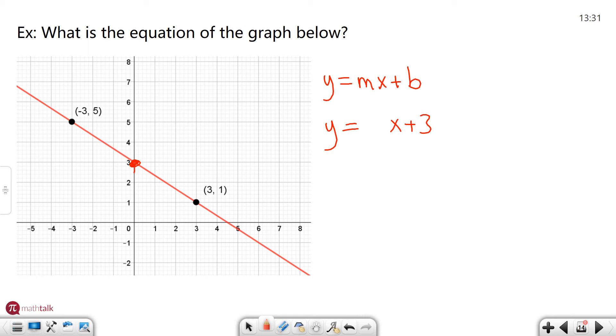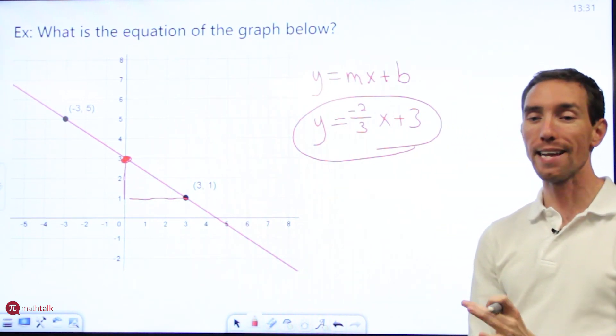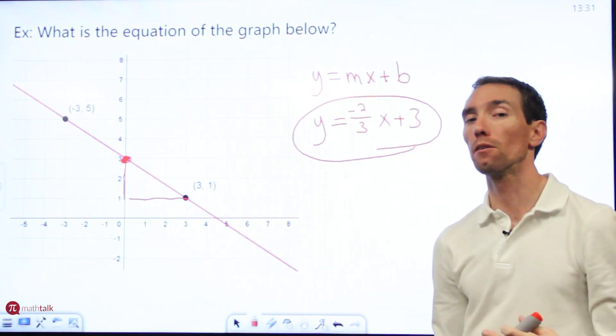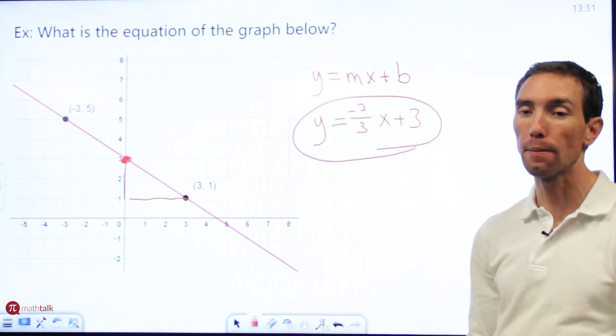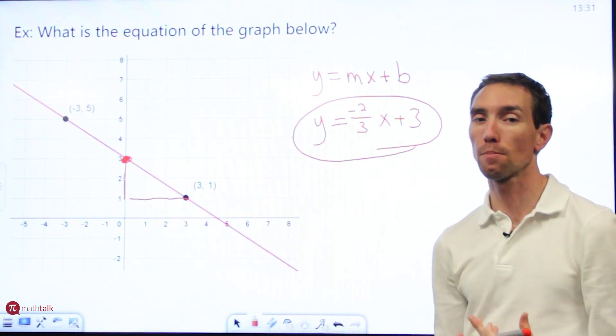My slope is going to be negative because the line goes down to the right. I got to go down 1, 2, so negative 2 over. Let's see run 1, 2, 3. Negative 2 thirds is my slope. This is the equation of that line. So keep in mind when you're looking at slope intercept form of an equation, m is your slope b is your y-intercept value. When you're looking at writing down the slope keep in mind does it go up to the right or down to the right when determining if it's positive or negative.